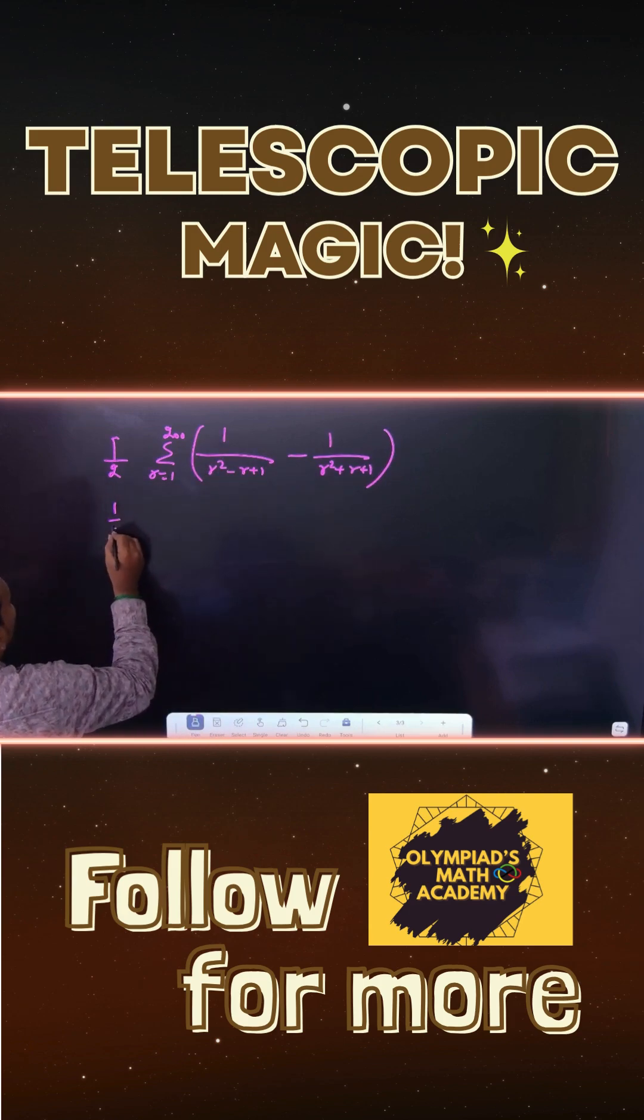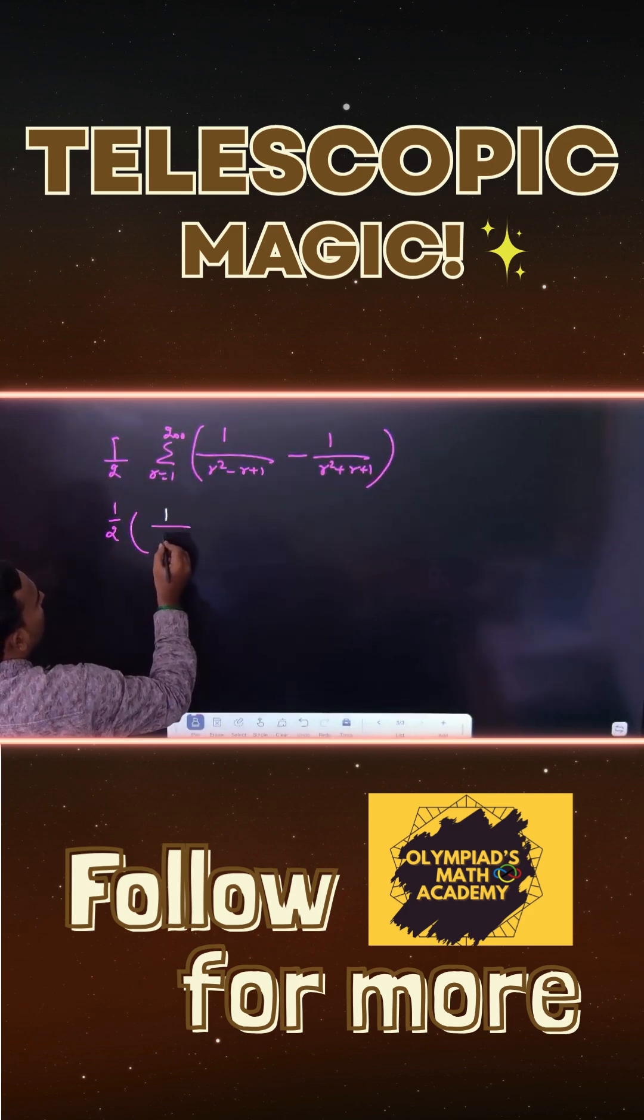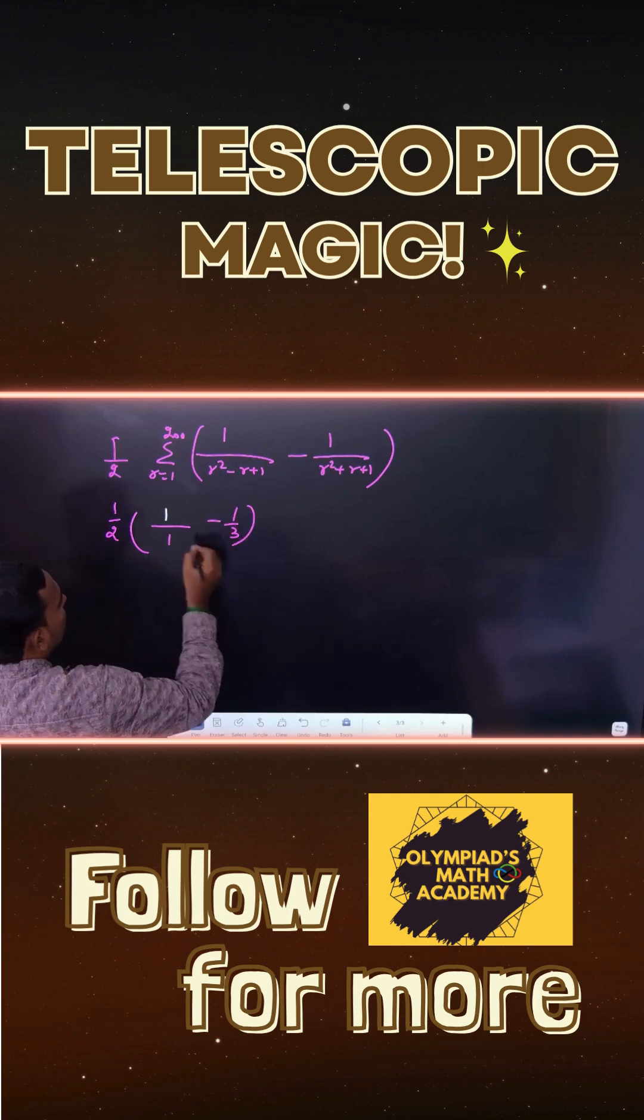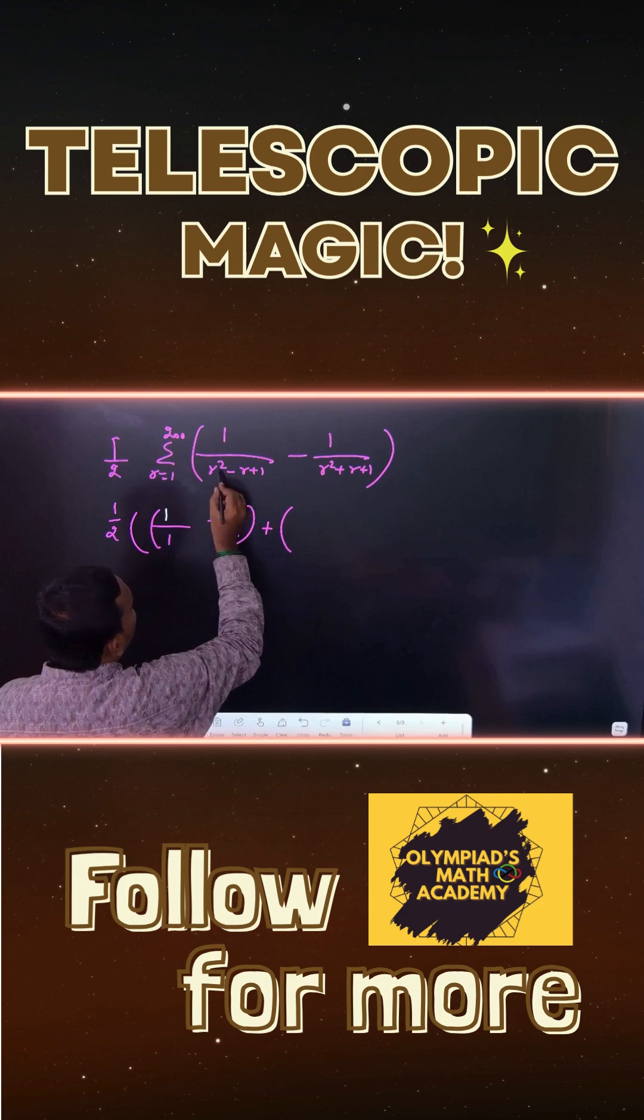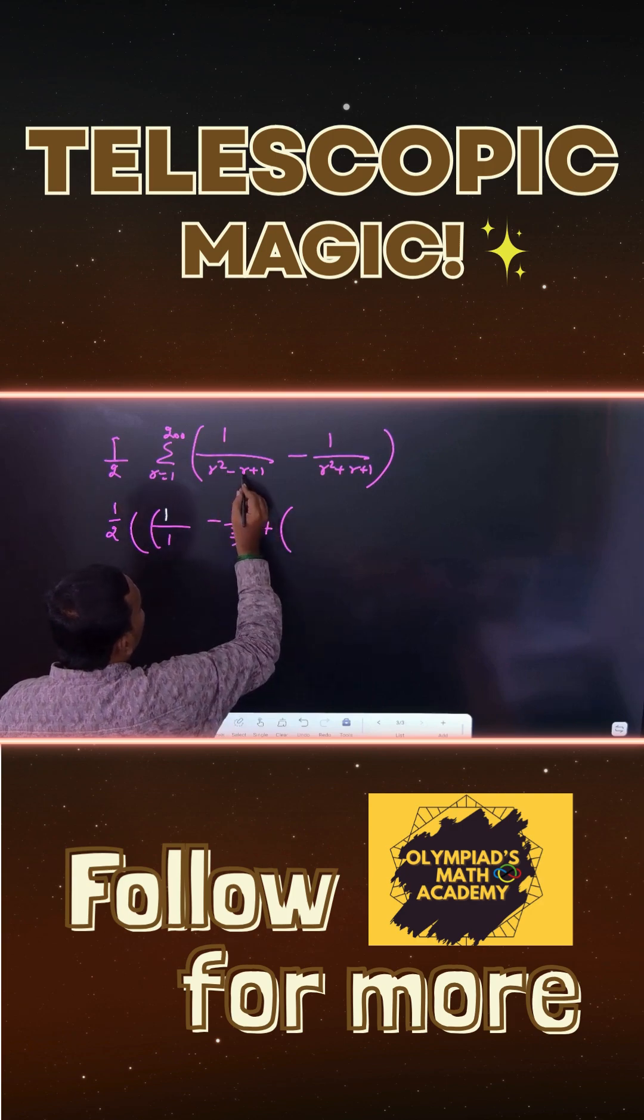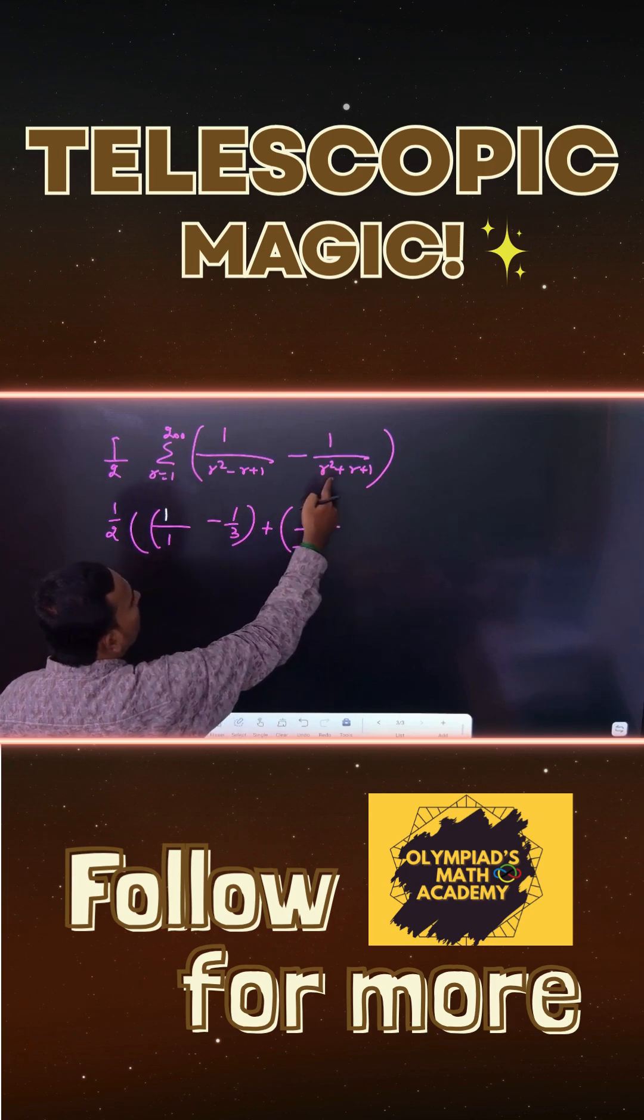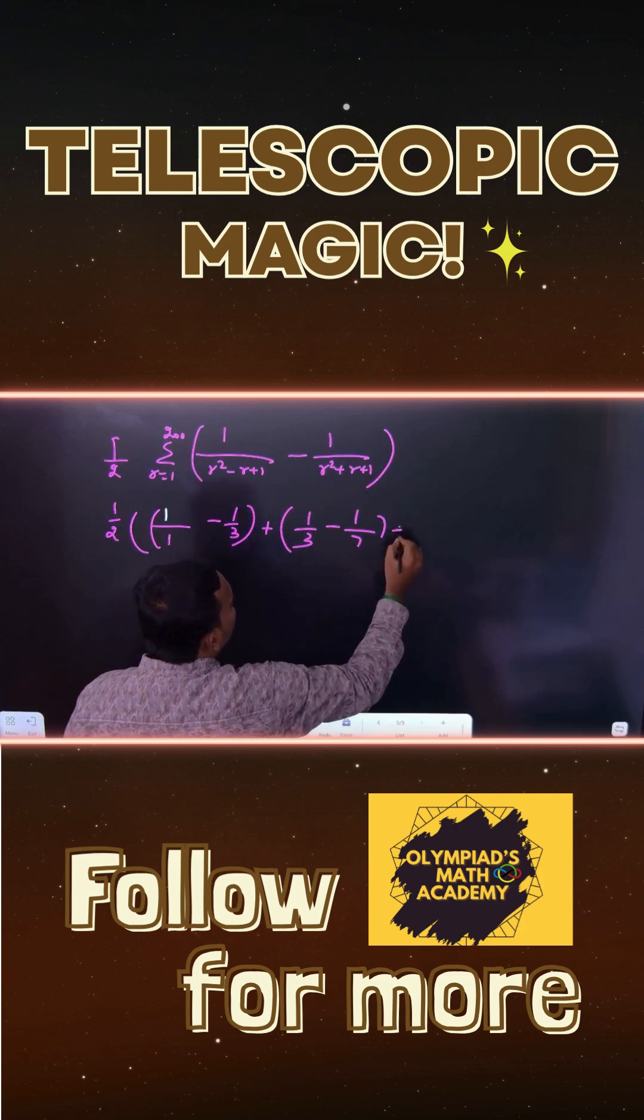You can apply r varies from 1 to 200. Just apply 1: 1 by 1, because 1 minus 1 cancels. Here 1 by 3 is the first term. Then you can apply 2 here. Let's see: 2 squared is 4, 4 minus 2 is 2 plus 1 is 3. Minus if I apply 2 here, it is 1 by 7, so on.